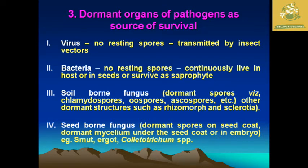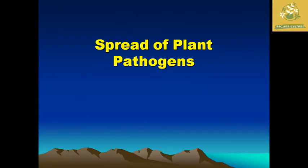Soil-borne fungi also have other dormant structures like rhizomorphs and sclerotia in the open environment. The fourth category is seed-borne fungi, known as dormant spores on the seed coat, dormant mycelium under the seed coat, or in the embryo. Examples include smut, ergot, and Colletotrichum species — these are microorganisms that form dormant structures in seeds.